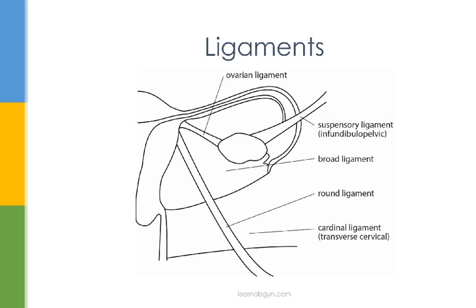The broad ligament is a sheet of peritoneum that folds over the uterus and covers mostly everything. To be more specific, it covers the uterus, fallopian tubes, round ligament, ovarian ligament, suspensory ligament of the ovaries, uterine and ovarian blood supply, and the uterus. However, it's important to remember that this is peritoneum, and because it's peritoneum, it does not cover the ovaries. The broad ligament connects all of this to the lateral pelvic wall.